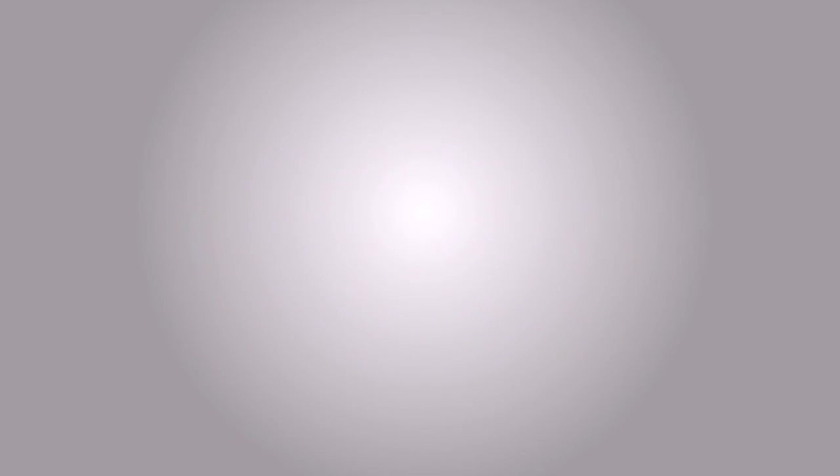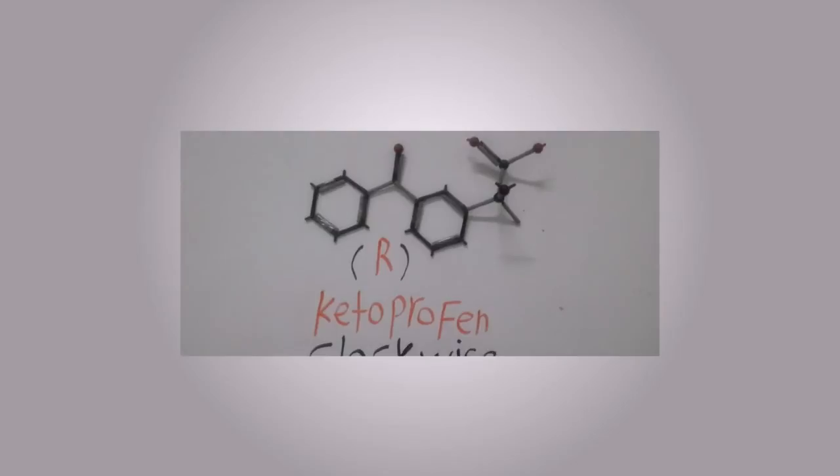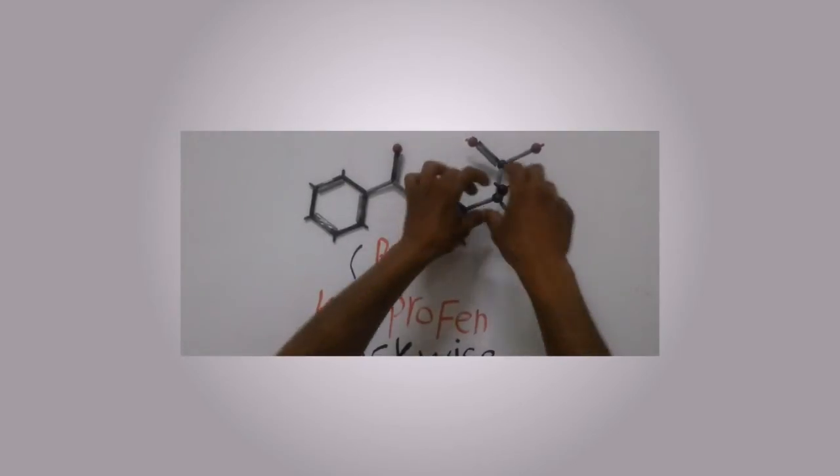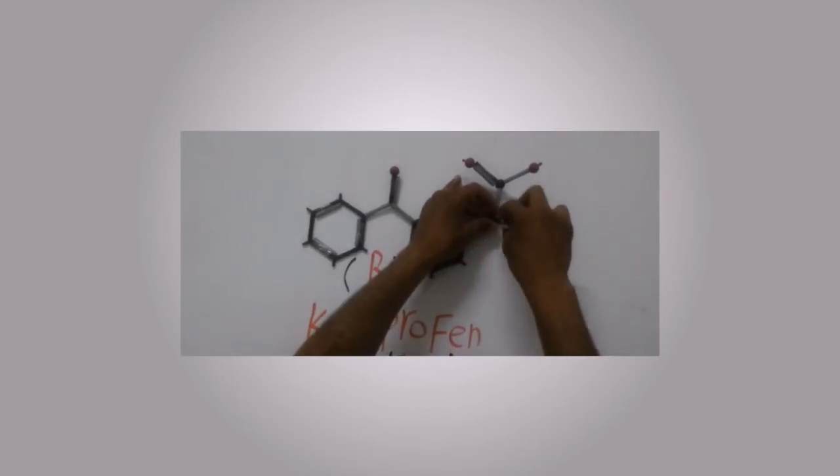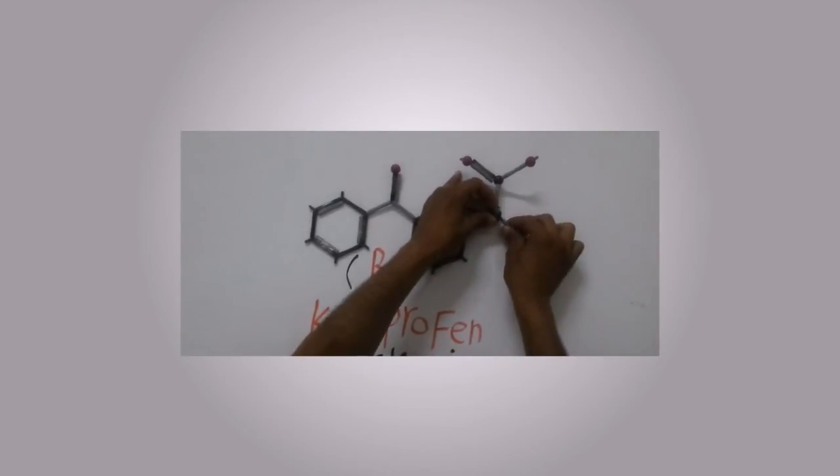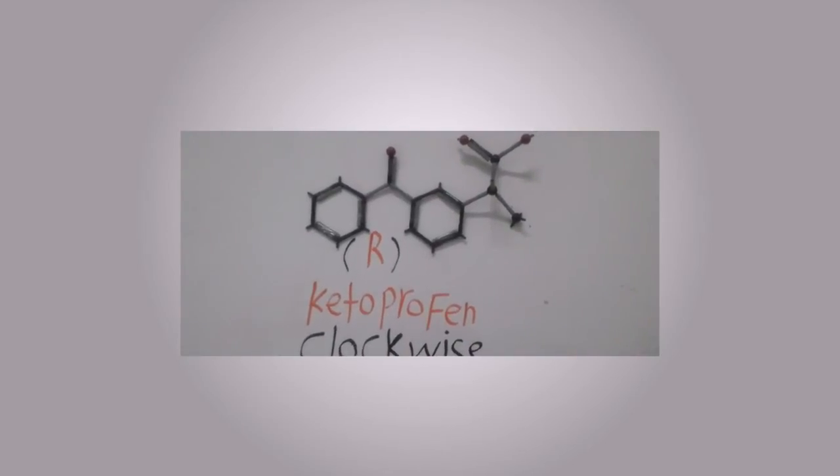The second is R enantiomer. The second form of isomer ketoprofen will be like this. The methyl group will be in the back and hydrogen atom will be in the front. This form is called R ketoprofen. We call it R because it is clockwise.